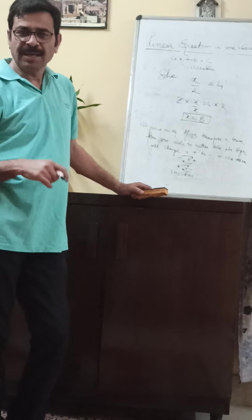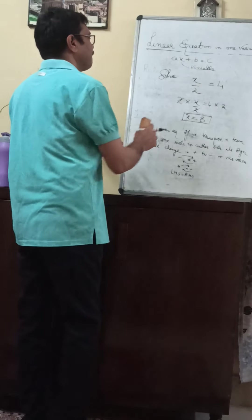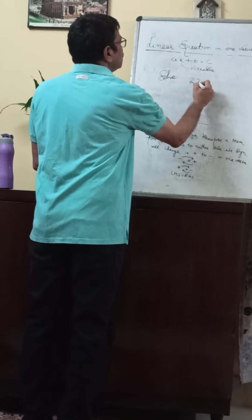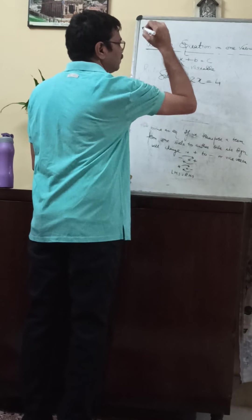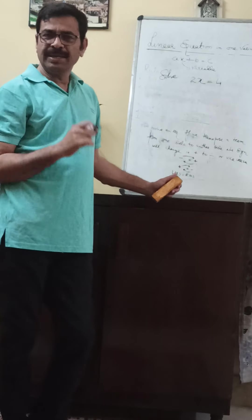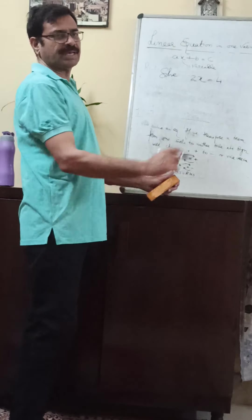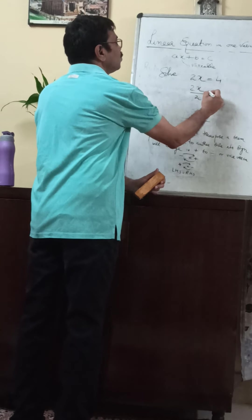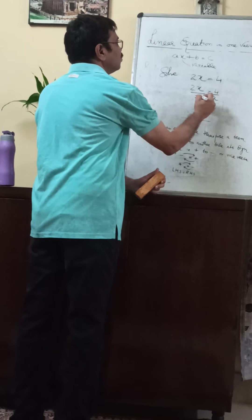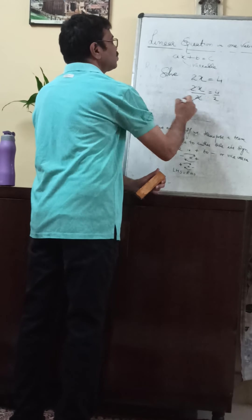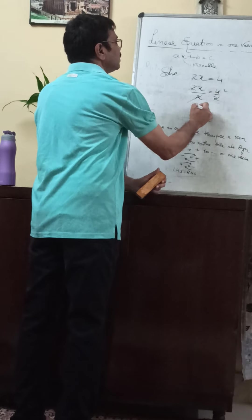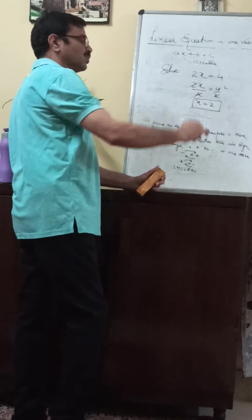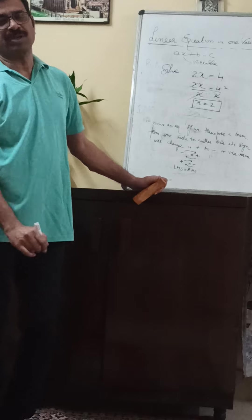Now I will apply rule number four. Solve: two x is equal to four. I am dividing by a non-zero number, two, on both sides. Two x upon two is equal to four upon two. This two cancels with this two, so x is equal to two. So x equals two is the solution of the equation.